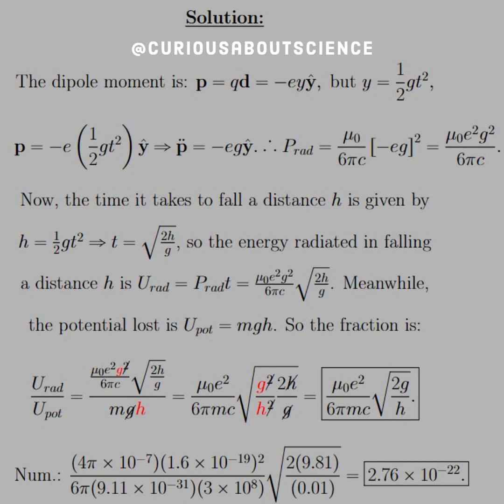So the energy radiated by falling a distance h is U-radiated equals P-radiated times time. So we have P-radiated from before times the time, which gives us square root of 2h over g. Again, you can read that pretty quickly. Now, meanwhile,